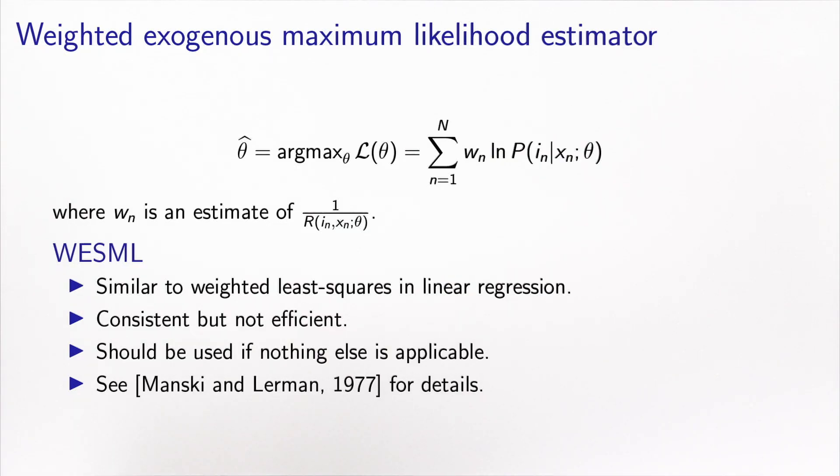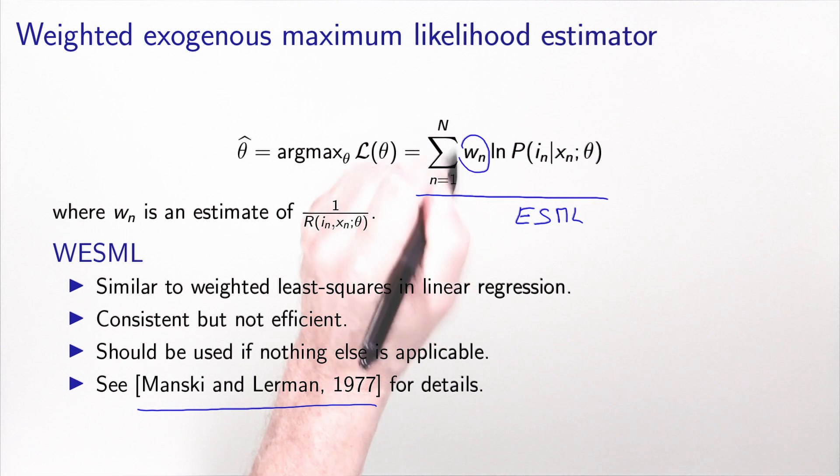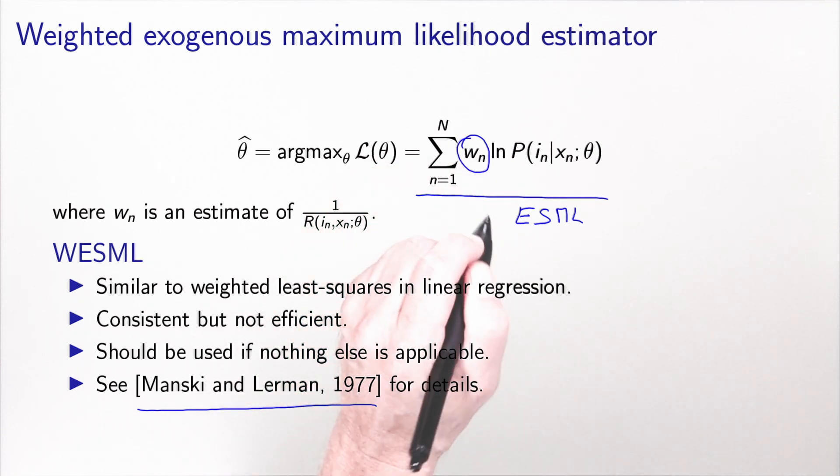We introduce an estimator called the weighted exogenous maximum likelihood estimator. It has been suggested by Manski and Lerman, and I refer you to the paper for technical details. This is basically the same as the ESML, the exogenous sample maximum likelihood, where each term in the sum is weighted. So there is a weight, and this is why it's called WESML.